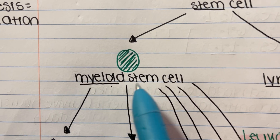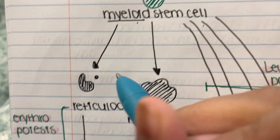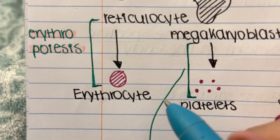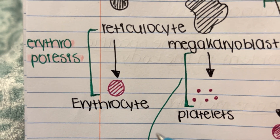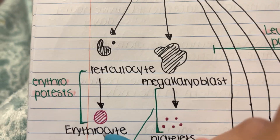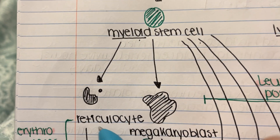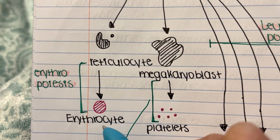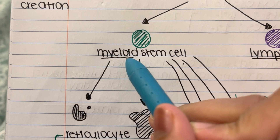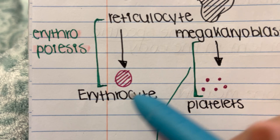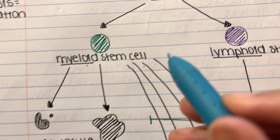The first type of cell the myeloid stem cell can create is the erythrocyte — your red blood cells. But it doesn't go straight from myeloid to erythrocyte. First, we get a reticulocyte, and from the reticulocyte we get the erythrocyte. So: myeloid stem cell → reticulocyte → erythrocyte.